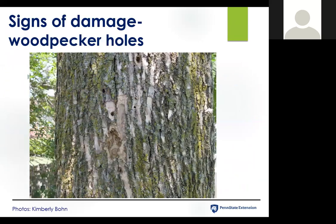Another good indicator is if you see a significant increase in woodpecker holes. You can see a picture here showing both that flaking bark effect as well as the woodpecker holes. The woodpeckers are going after the emerald ash borer larvae, and there have been measurements showing that a healthy woodpecker population will actually consume about 20 to 30 percent of the emerald ash borer population.